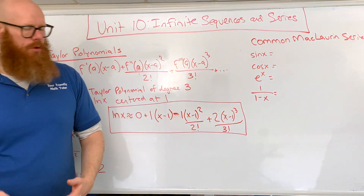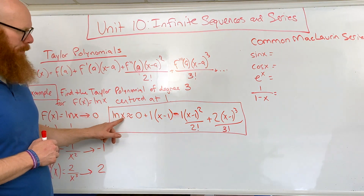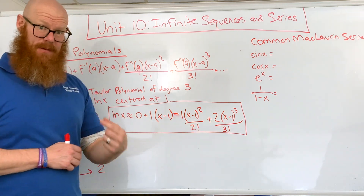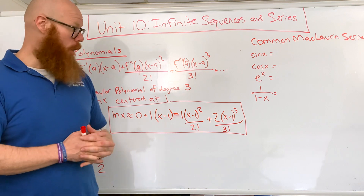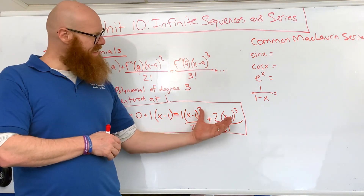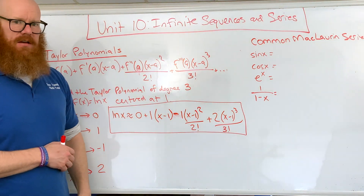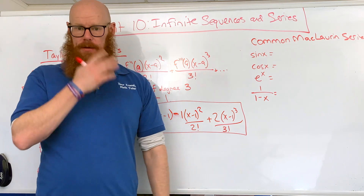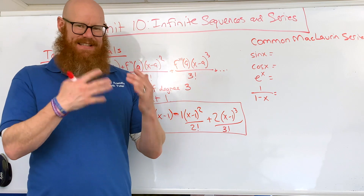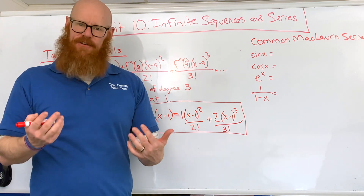We could keep going — if we wanted degree 4, we'd find the fourth derivative at 1 and multiply by (x − 1)⁴ over 4 factorial. The more terms we do, the more accurate it would be. For example, to approximate ln(1.1), just plug in 1.1. You'd be surprised how good the approximation is with only a few terms. If we continued this out to infinity, it would exactly equal the natural log of x. So all functions can be written as polynomials — approximated by them, and exactly equal when taken to an infinite number of terms.